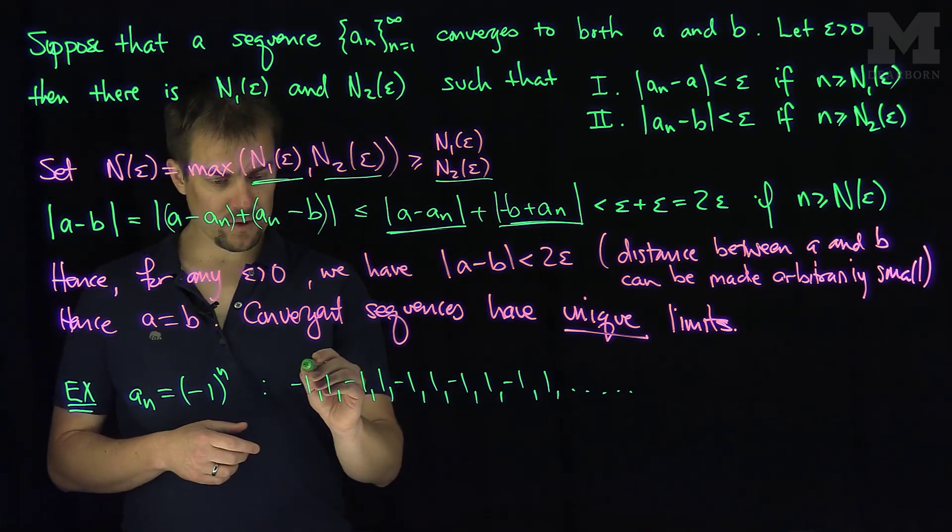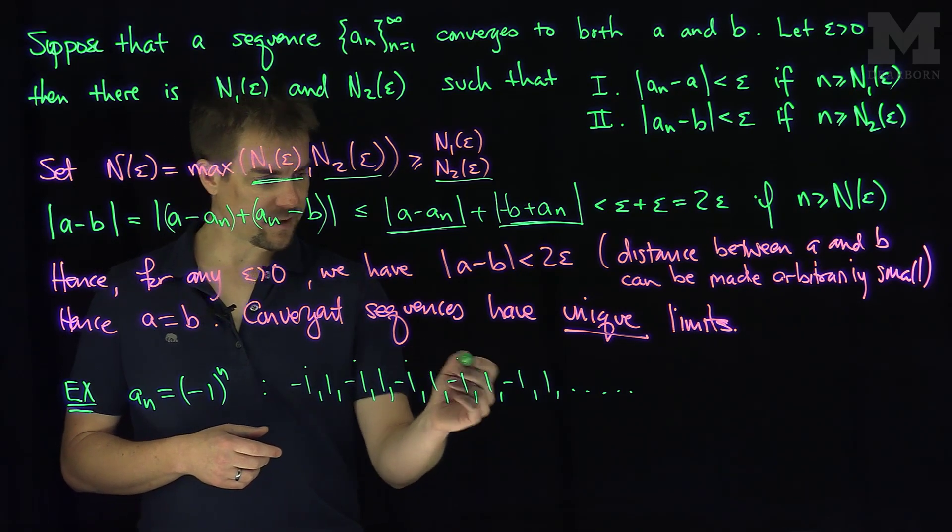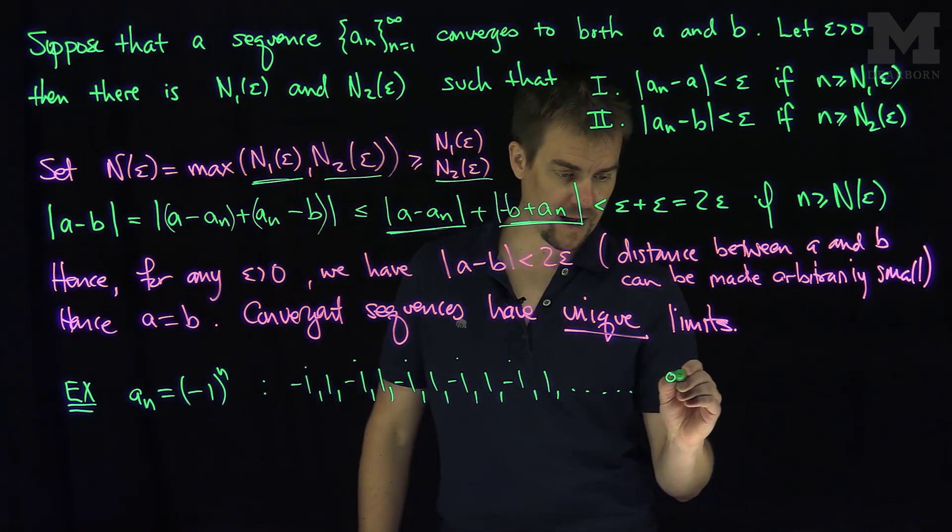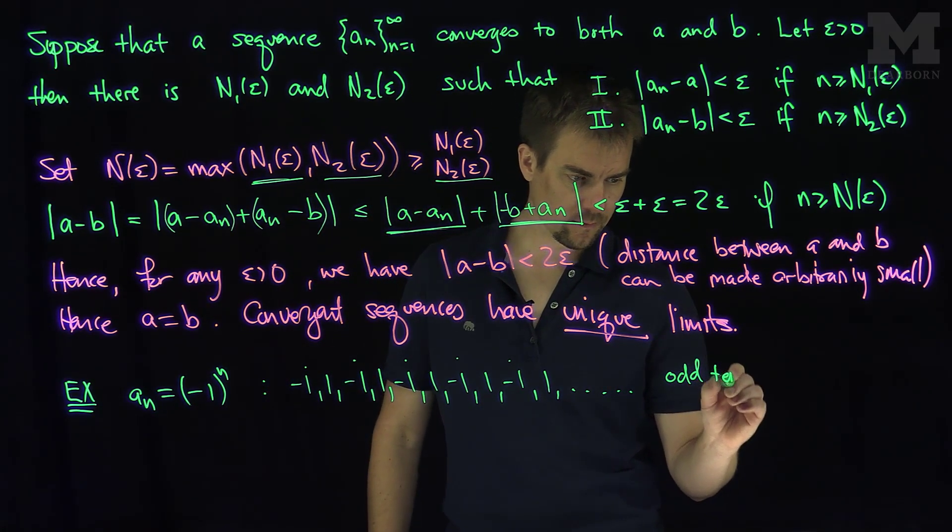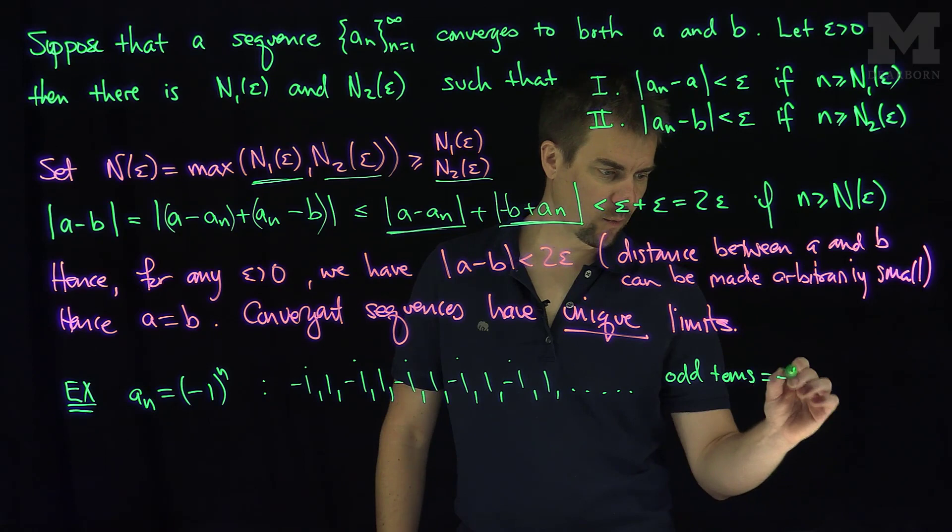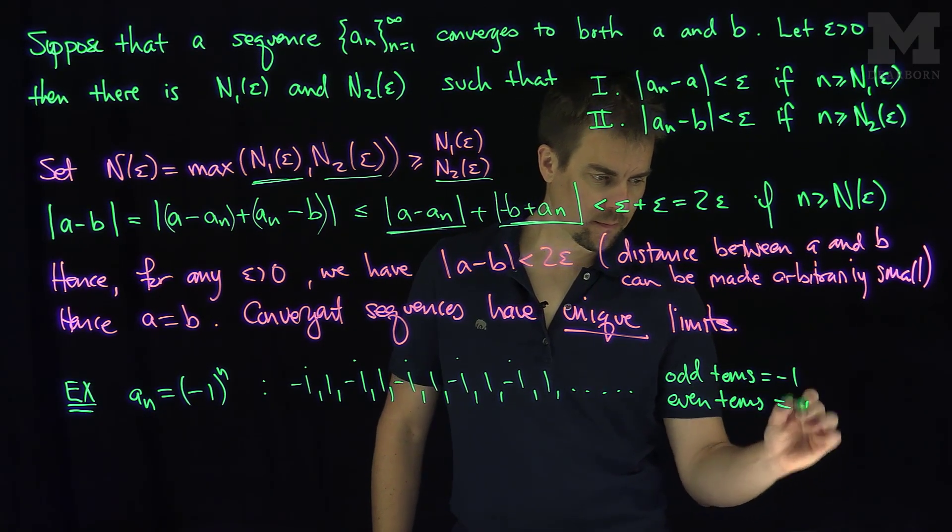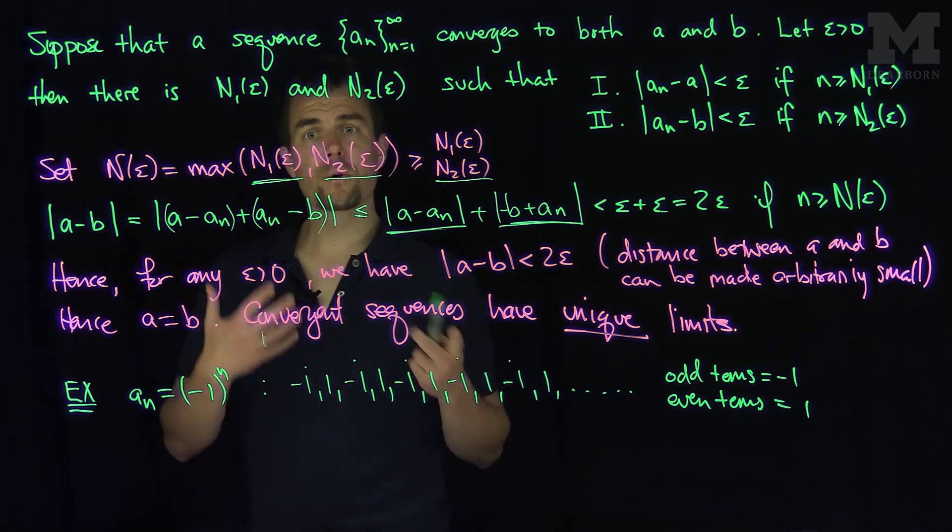So it looks like the odd terms—the first term, the third term, the fifth term, the seventh term, the ninth term—all the odd terms are negative one. In other words, odd terms are negative one and the even terms are one.